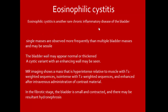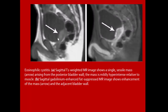Eosinophilic cystitis is another rare chronic inflammatory disease of the bladder. Single mass is observed more frequently than multiple bladder masses; may be cystic. Bladder wall may appear normal or thickened. Cystic variant with an enhancing wall may be seen. MRI shows mass hyperintensity relative to muscle on T1, isointensity on T2, enhancing after IV contrast. In the fibrotic stage, the bladder is small and contracted with possible hydronephrosis. Example case shows single sessile mass from posterior bladder wall, mildly hyperintense on T1, with gadolinium enhancement.